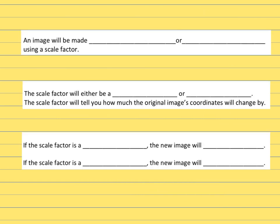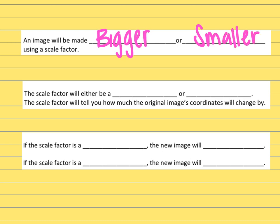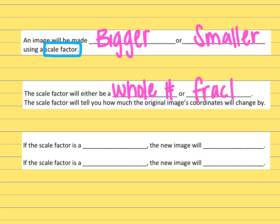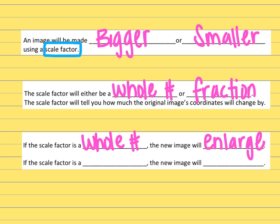An image can be made bigger or smaller using a scale factor — that's going to be an important word. The scale factor will either be a whole number or a fraction. The scale factor will tell you how much the original image will be changed. If the scale factor is a whole number, the image will enlarge.